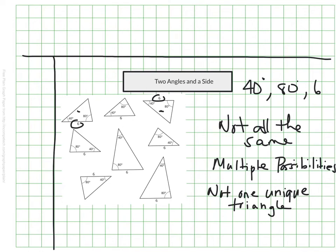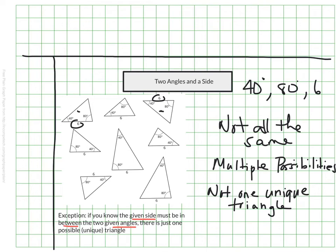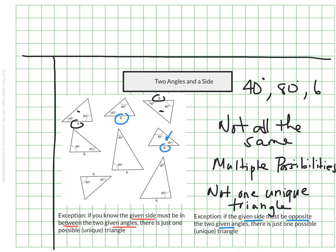However, there are a couple of exceptions. If the given side is in between your two angles, then there is only one possibility — it could be flipped and rotated, but it's really just the same triangle every time. Similarly, if the given side has to be opposite the two angles — for example, a side of 6 that is across from both the 40 and 80 degrees — that triangle is identical as well and produces just one unique option.